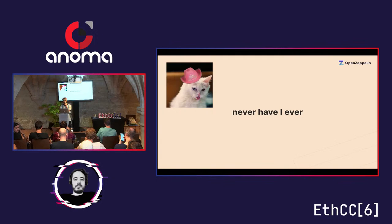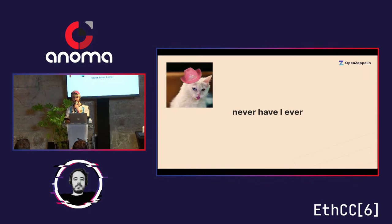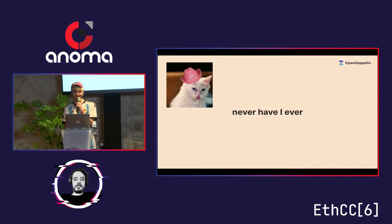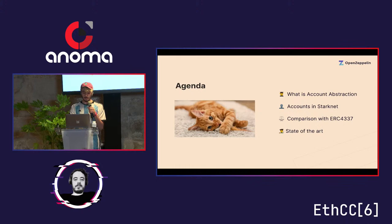Before we begin, I'd like to know who in here has a good idea what account abstraction is — raise your hands. And who of you is familiar with EIP-4337? And who of you have ever used account abstraction in any form: 4337, StarkNet, zkSync? Today we're going to be talking about what account abstraction is, how accounts work in StarkNet, a brief comparison with EIP-4337, and then a few updates on the state of the art, some challenges, the future, and so on.